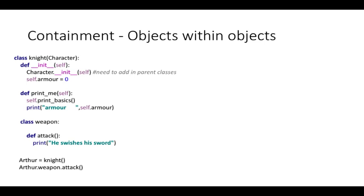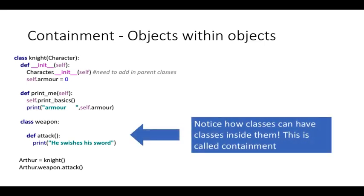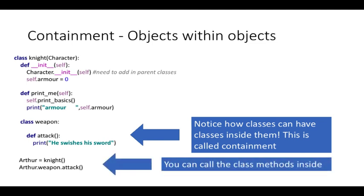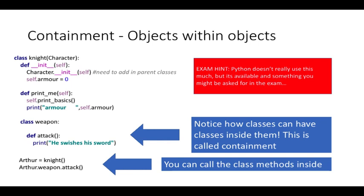Another one here is look at these objects within objects. Notice how the classes can have classes inside them. This is called containment. It's not really recommended in Python because you can just declare them as such, but this can force it to happen. And you can call the class methods inside. Now as I said, Python doesn't really use this much, but it's available and something you might be asked for in the example.